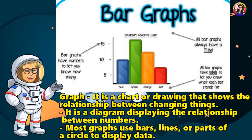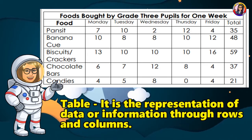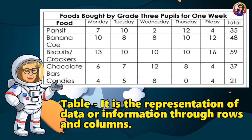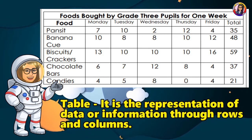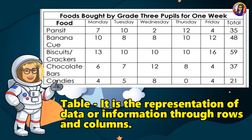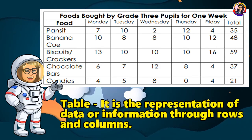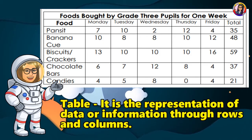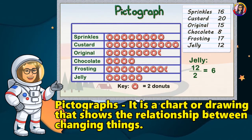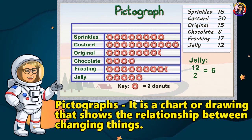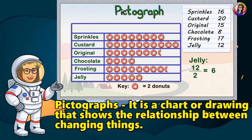Here is an example of a bar graph. Next is the table. A table is the representation of data or information through rows and columns. Here is an example. Then, the pictograph — it is a chart or drawing that shows the relationship between changing things. Here is an example.